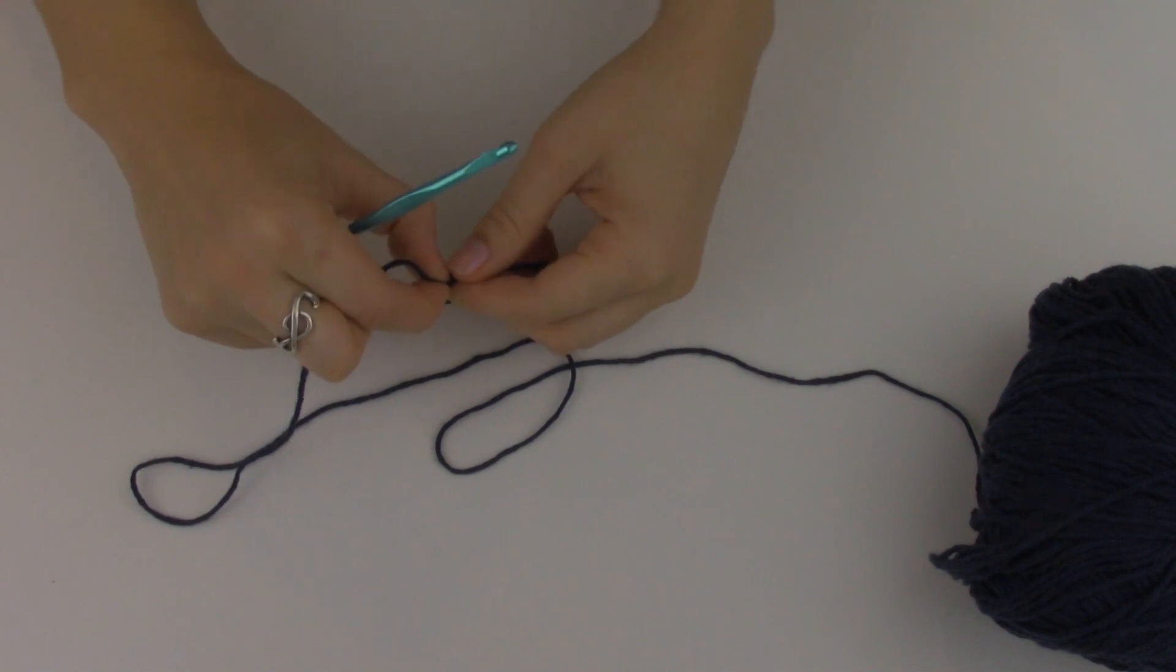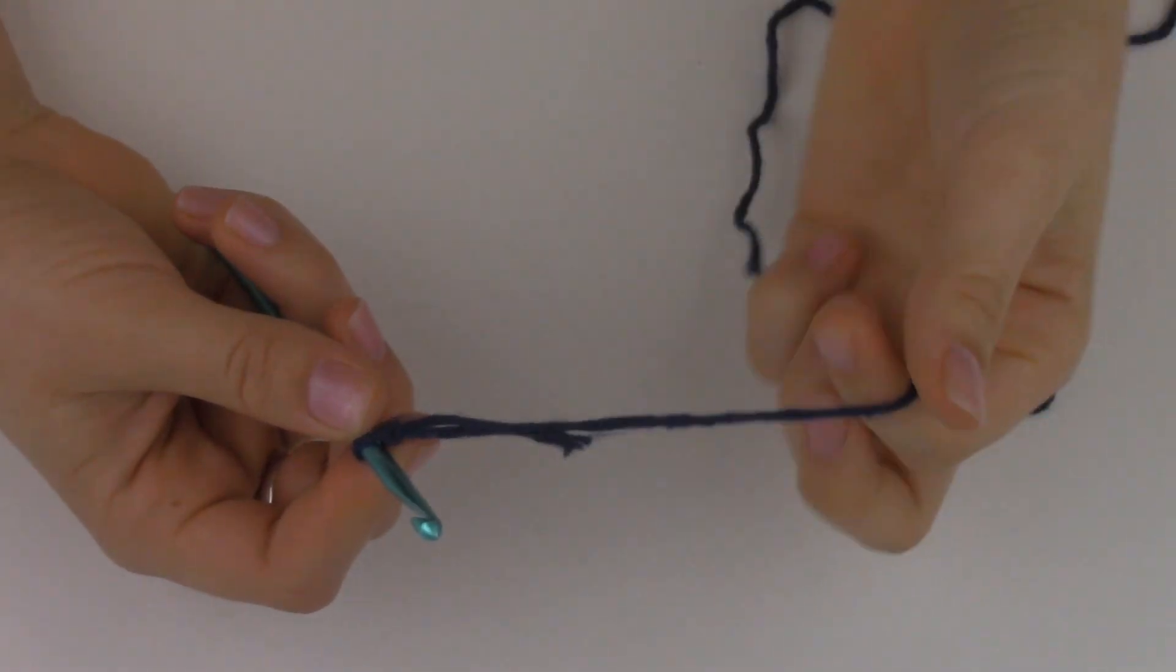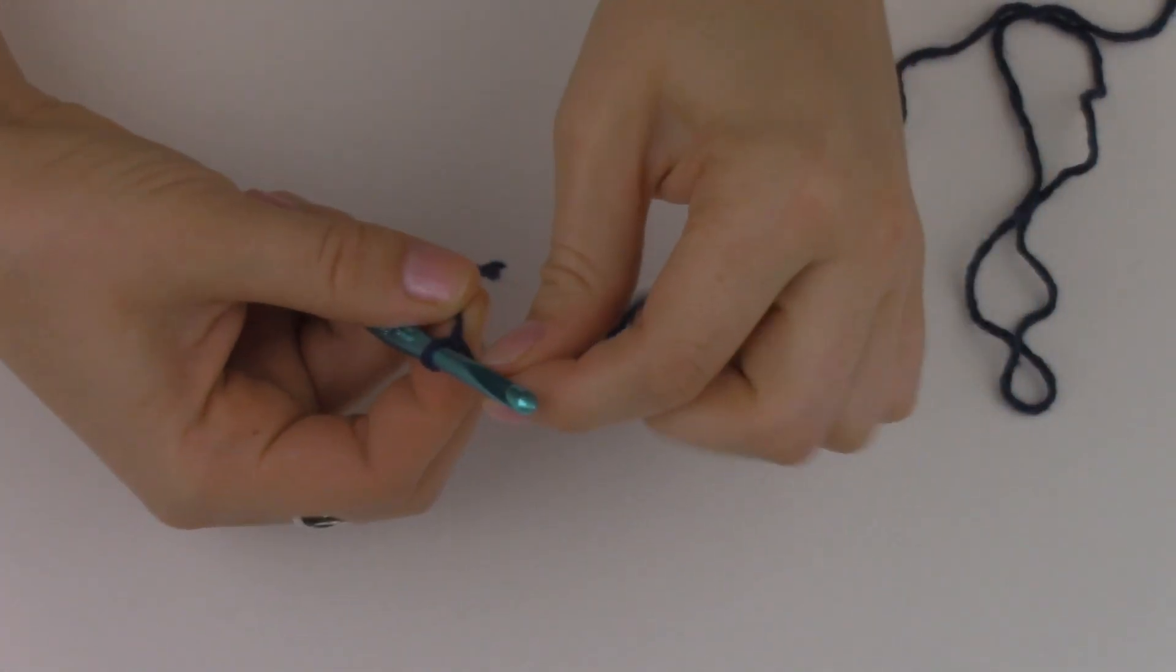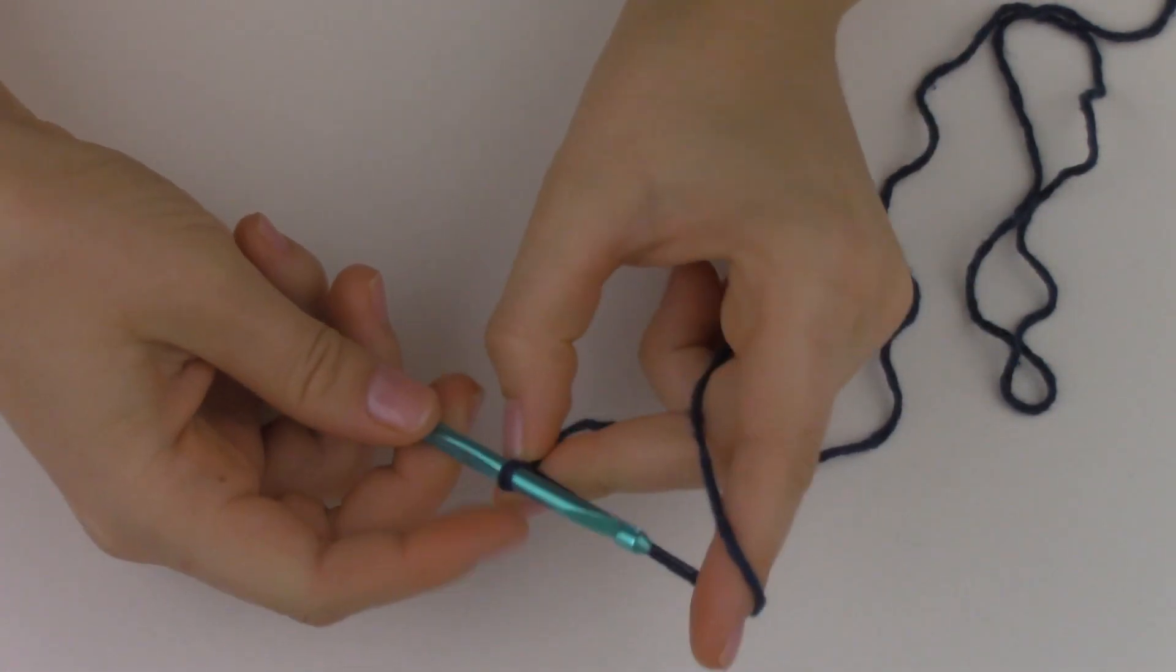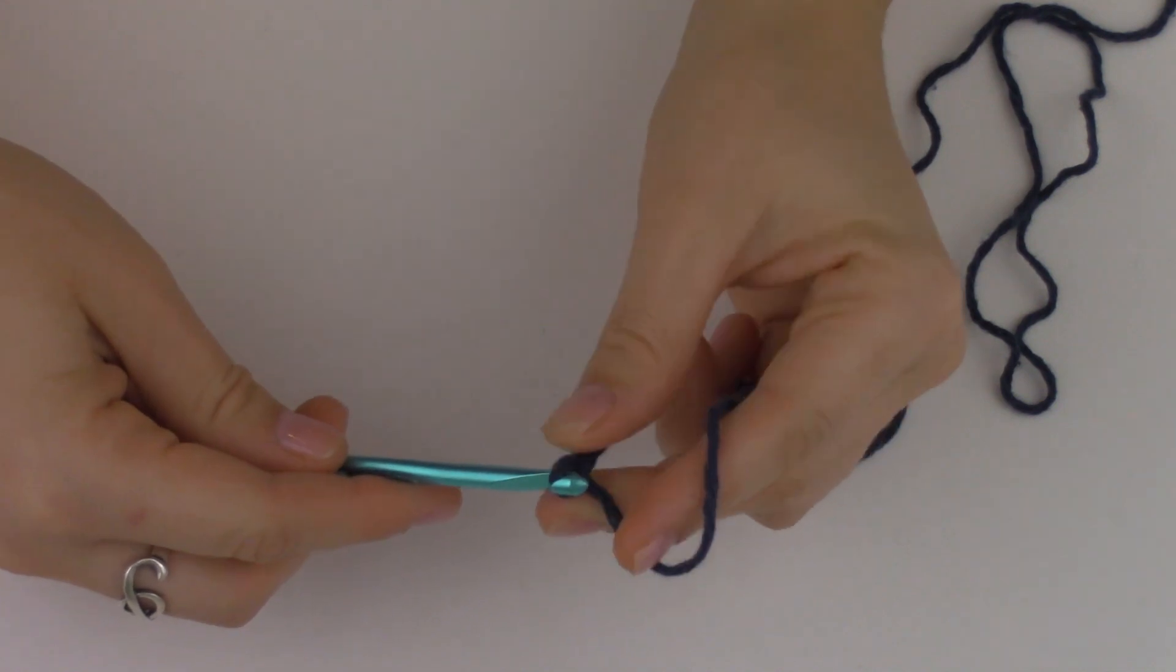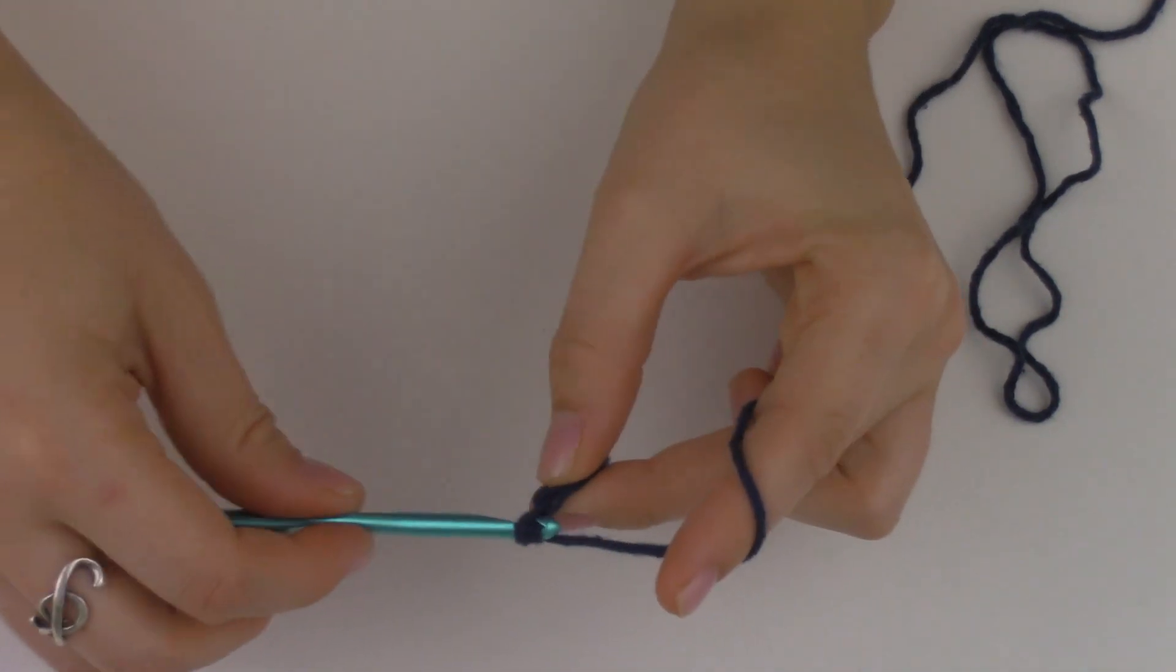Go ahead and start off with a slip stitch. Starting off with a slip stitch, I am going to chain 15 plus 1, so 16 in total. And that will equal the width of my headband.